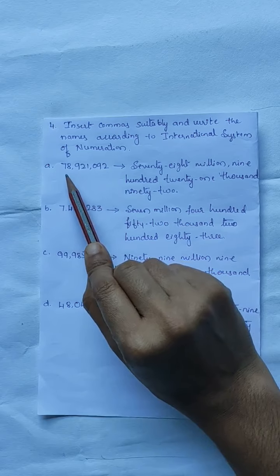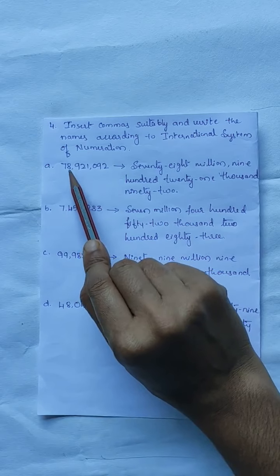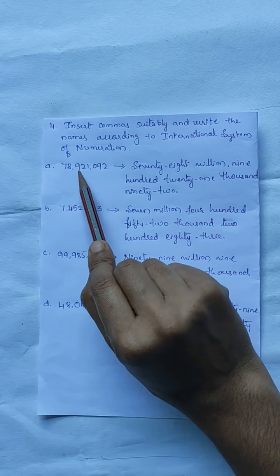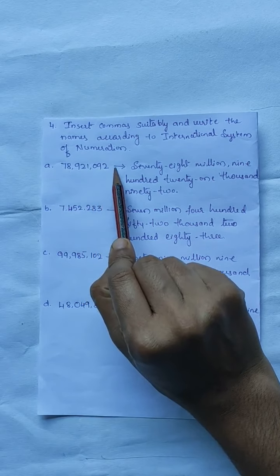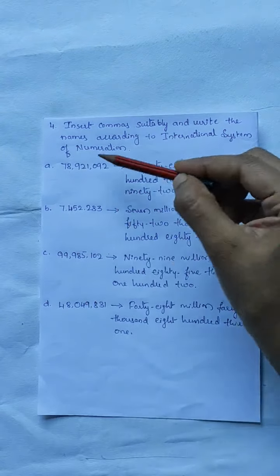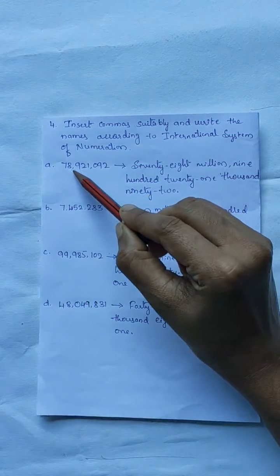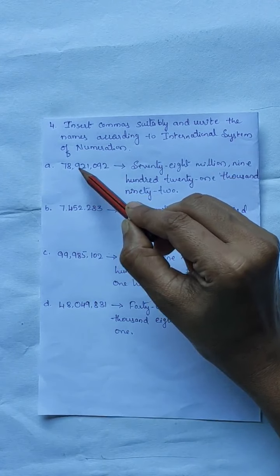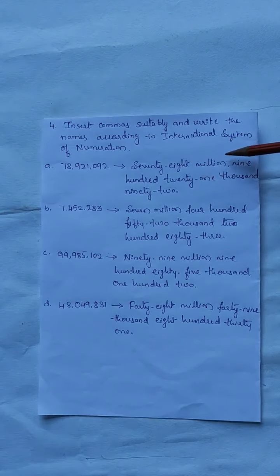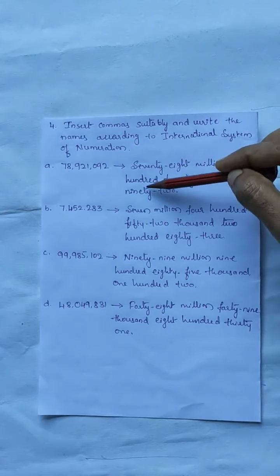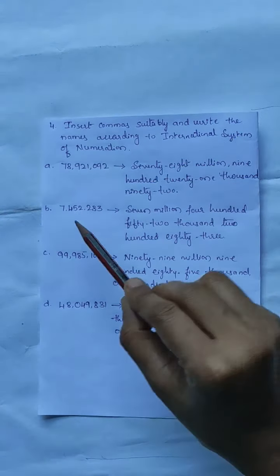So, this is 78,921,092. After every three digits we are going to insert the commas, and we also have to write the number name. 78,921,092.